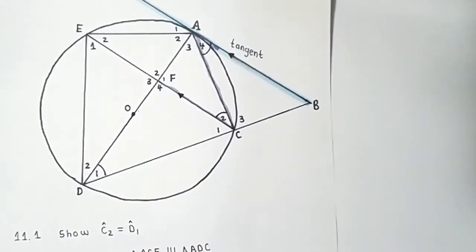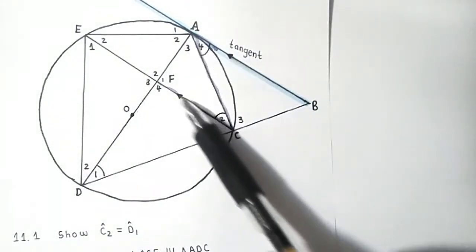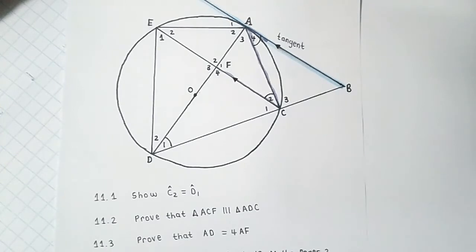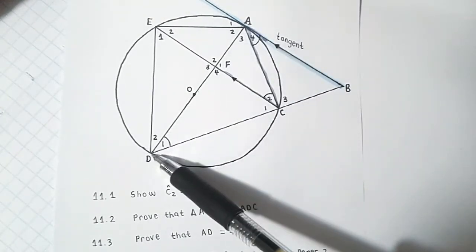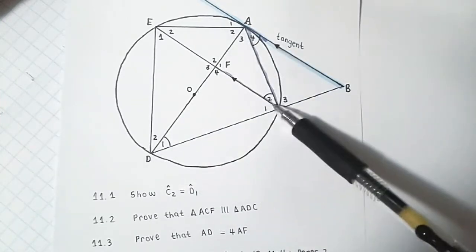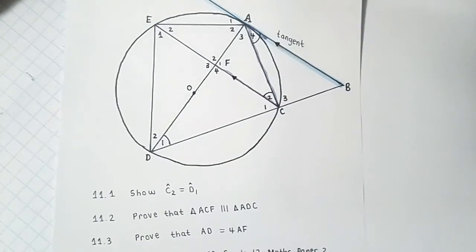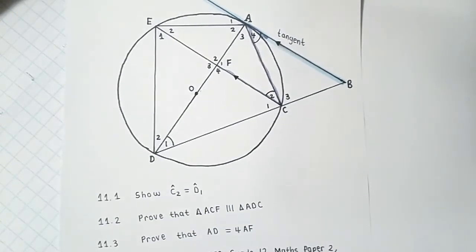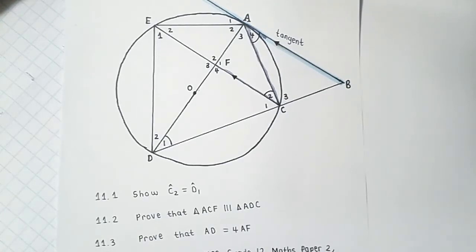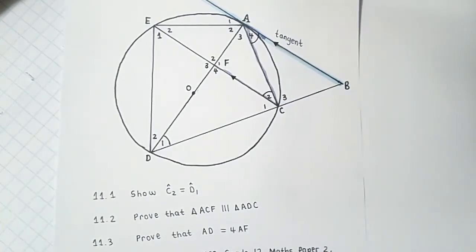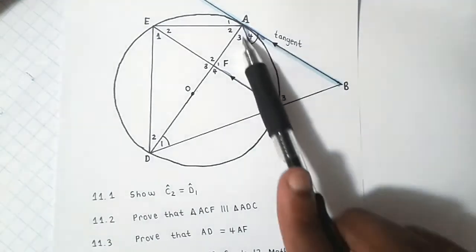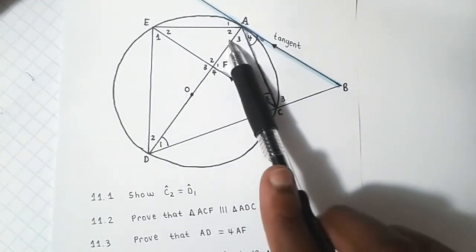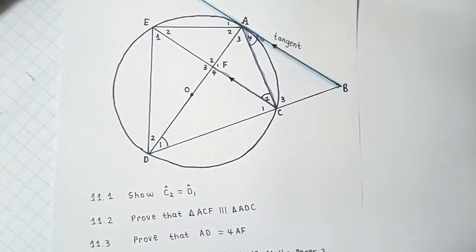Then the next question says, prove that triangle ACF, that small triangle there, please just follow my pen, prove that it is similar, remember those three vertical lines mean similar, to the triangle ADC. So that's relatively an easy proof of similarity. Remember when we are proving similarity, it is enough for us to prove that two angles on the inner triangle are equal, that's because the third angle of the triangle will then be automatically equal. So we're going to prove this using angle-angle similarity.